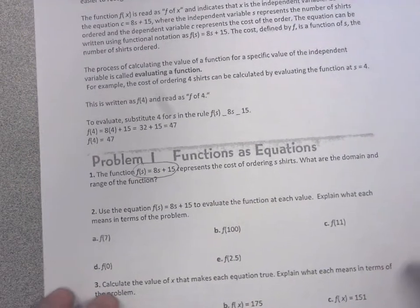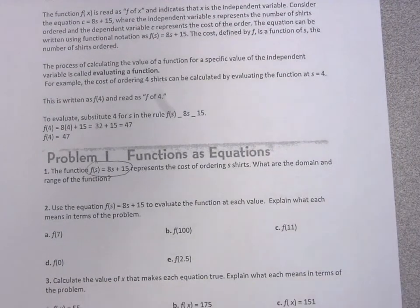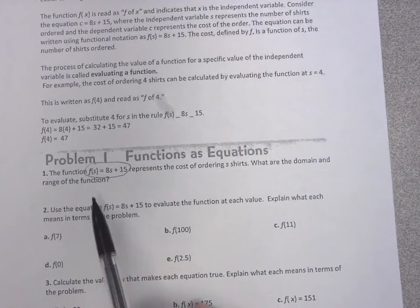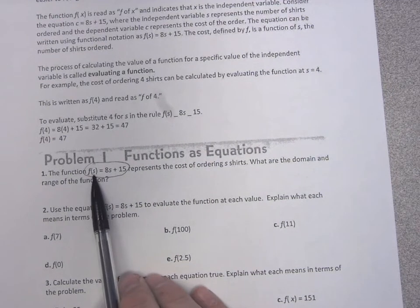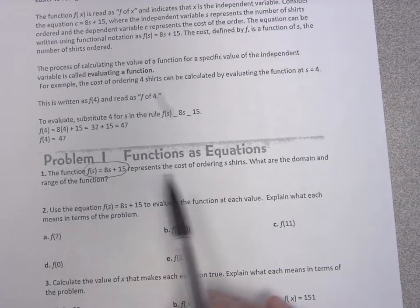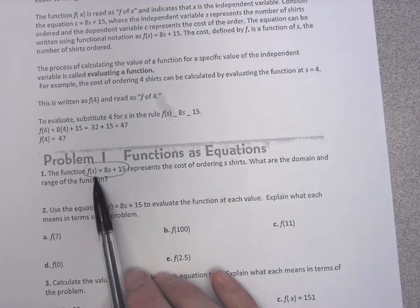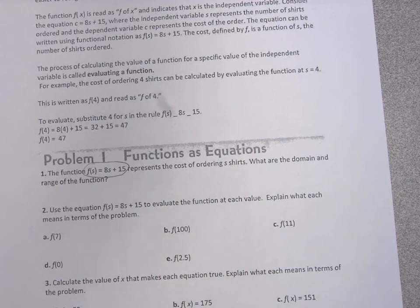Alright, let's take a look at problem number one. It says the function f of s equals 8s plus 15 represents the cost of ordering s shirts. The input is s — the letter inside the parentheses — and that stands for shirts. There's another s in the equation, so that also stands for shirts. f of s stands for the cost of a bunch of shirts.